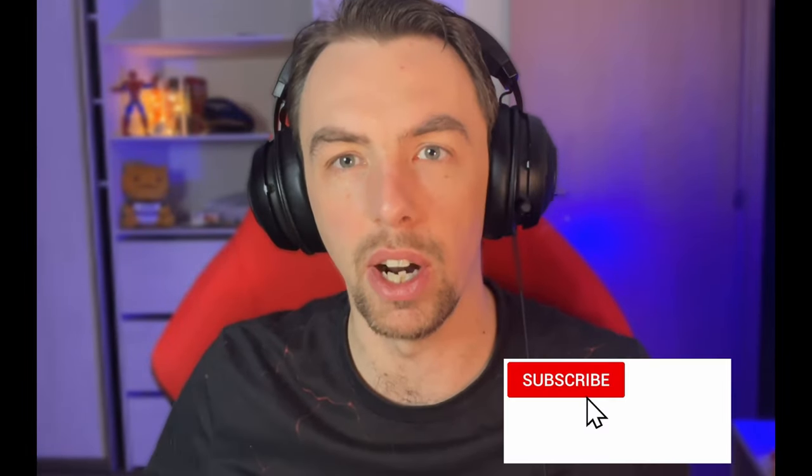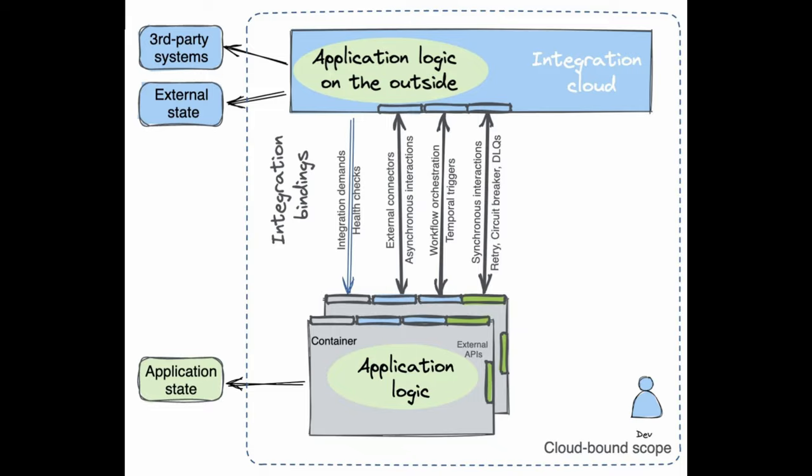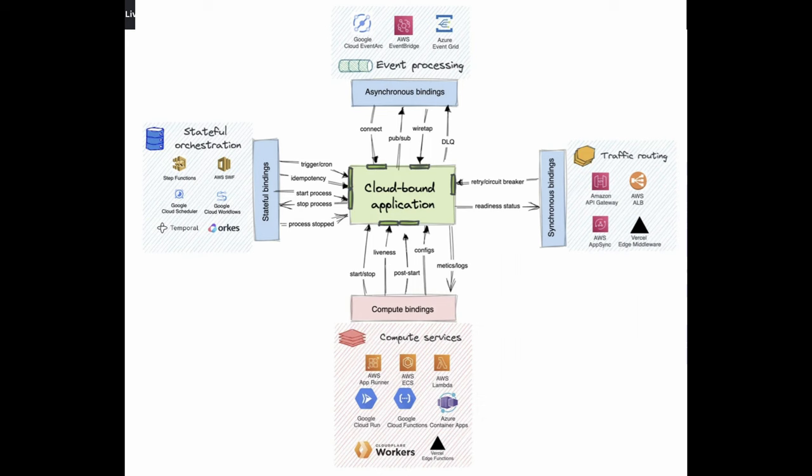If you consider the whole environment of an application running in the modern cloud — be it a container, a virtual machine, or a Lambda function — you will discover two sets of bindings: compute bindings and integration bindings. While the first set is transparent to developers, the second consists of APIs and all means of integration with queues, storages, and all that. So if you add some asynchronous bindings and other things, you get a landscape of what is called a cloud-bound application. I'm sharing the first highlight of this week about cloud-bound applications and how they are the next step in the evolution of applications.